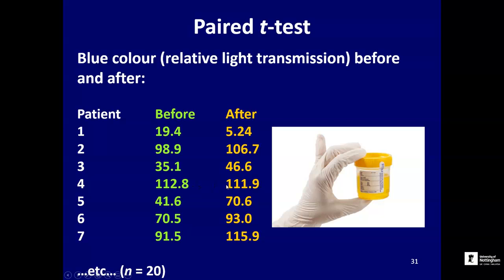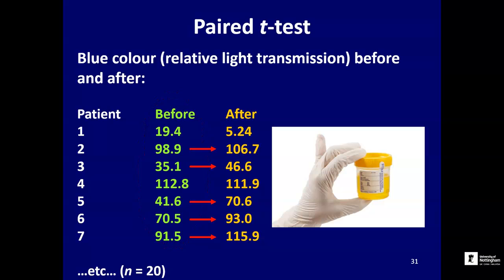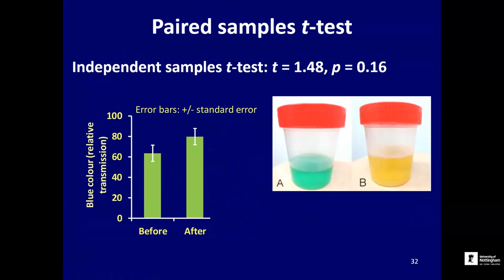By looking at the same patient twice in quick succession, we've gotten rid of some of the problems caused by the fact that each patient is very different. Looking at the transition between before and after, in five out of the first seven data points the level of blueness increases after treatment with the drug, which begins to suggest there might be a small effect of the drug on urine blueness — even though there's a lot of background variation in how blue it is to start with.